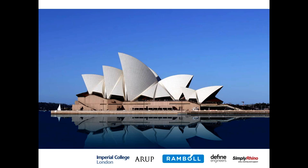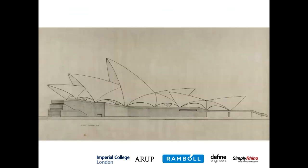The Sydney Opera House was designed in the 1950s by the Danish architect Utzon, who won the competition with this drawing. When he won, he came to Ove Arup, a young engineer at the time but also Danish, who had opened an office in the UK. He asked for Arup's help to realise his idea — having a series of shells where these surfaces would work structurally as shells.